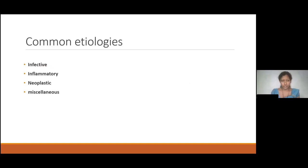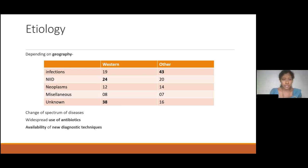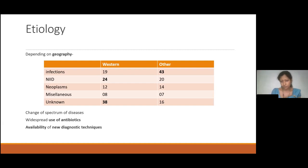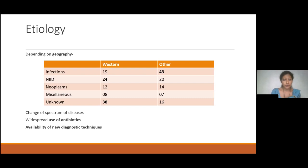The common etiologies for PUO are infective, inflammatory, neoplastic, and miscellaneous. The contribution from each etiology depends on geography, temporal changes in the spectrum of diseases, widespread antibiotic use, and availability of new diagnostic techniques. Based on a study looking at PUO cases over the last 25 years, in Western countries the contribution from non-infectious inflammatory diseases is higher at 24% than infections, whereas in non-Western countries infections contribute more at 43%. Nowadays, because of advanced imaging techniques, the contribution from neoplasm to PUO is becoming less and less.